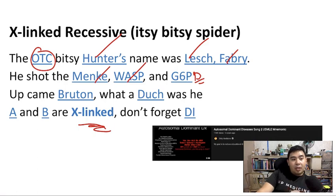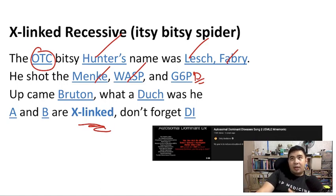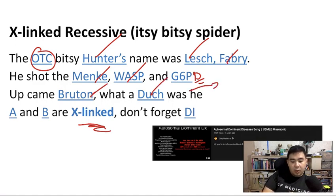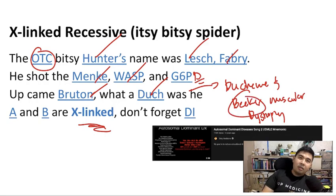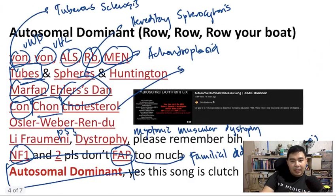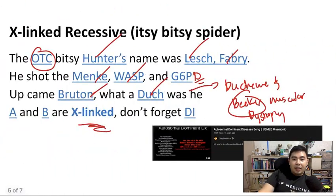"Up came Bruton" — Bruton agammaglobulinemia is also a disease of the immune system. "Douche" refers to Duchenne, and alongside it Becker muscular dystrophy. These are the X-linked recessive dystrophies, as opposed to myotonic muscular dystrophy mentioned in the autosomal dominant song.